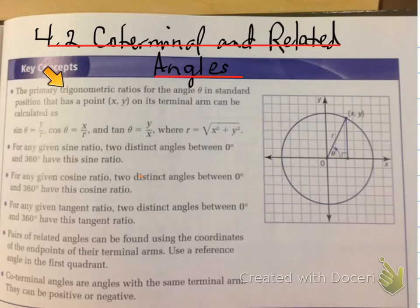First, the primary trigonometric ratios for the angle θ in standard position has a point on its terminal arm which can be calculated as sin θ = y/r, cos θ = x/r, and tan θ = y/x, where r = √(x² + y²). Don't forget that r is always positive because we're talking about the length of a radius.